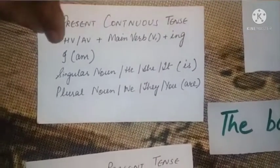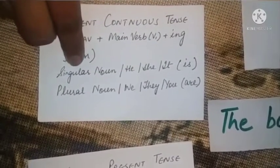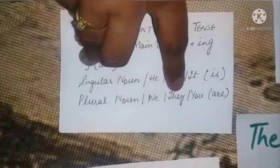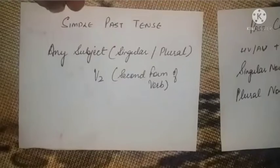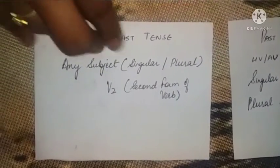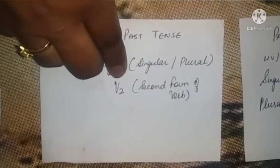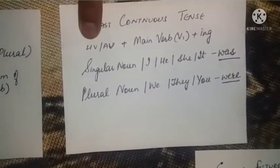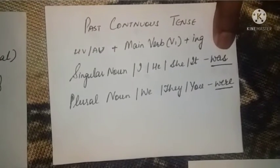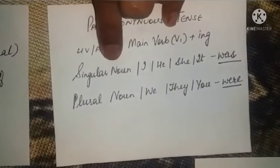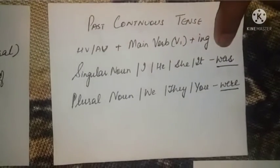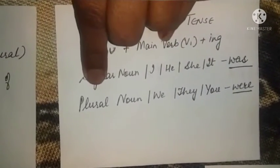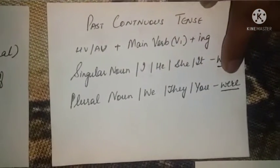Present continuous tense mein hum helping verb plus main verb plus '-ing' use karte hain. Singular noun mein — he, she, it — aur unka friend 'is'. Plural noun hota hai, we, they ya you — unka friend 'are'. Beta, in simple past tense, jab koi bhi subject hota hai — chahe singular ya plural — hum verb ki second form use karte hain. Past continuous tense mein bhi helping verb plus main verb plus '-ing' hota hai, lekin helping verbs different hote hain — was ya were. Was: singular noun, I, he, she, it. Were: plural noun, we, they, you.